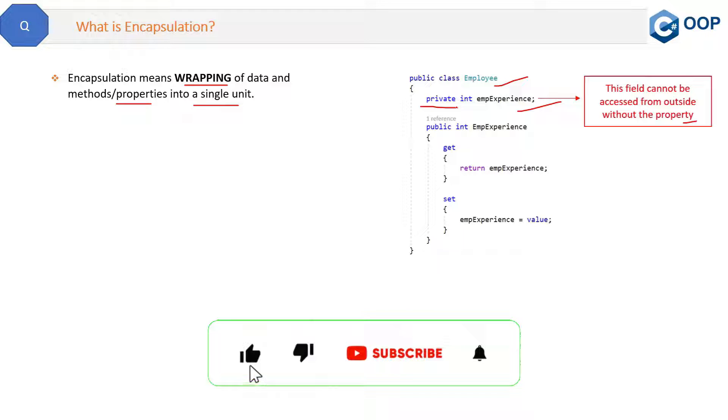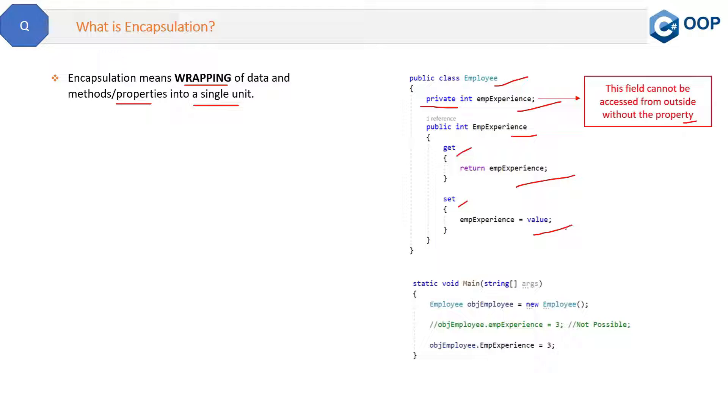So in order to access this field, we have created this public property empExperience, and inside this property we are getting this field empExperience and setting the value of the field. So that's how we will access this property outside of this class. Now you can see inside the main method we are accessing the property, not the field. So if we try to access this field directly, then it will give some compile time error.